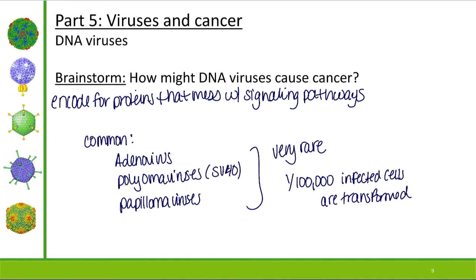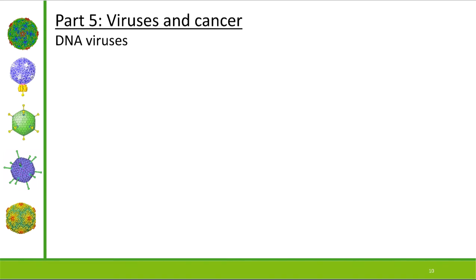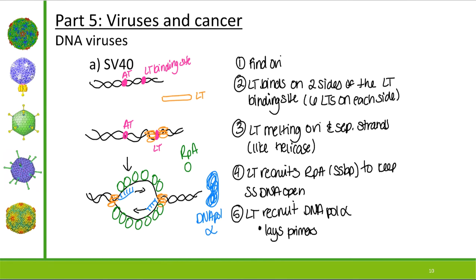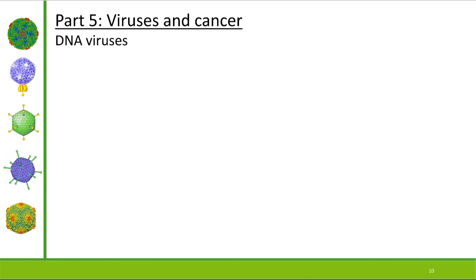Moving forward — these DNA viruses can encode for proteins that mess with signaling pathways. Let's get more specific by talking about a key finding: T antigens. We were first introduced to T antigens when talking about SV40 replication. But it turns out the T antigen is also important for activating viral transcription.